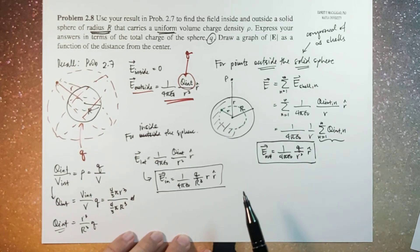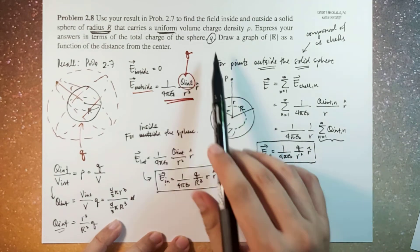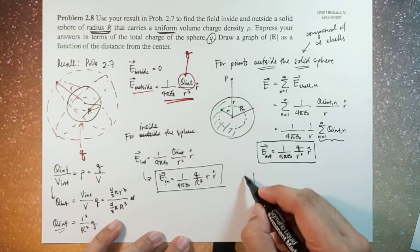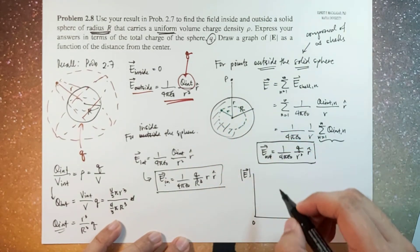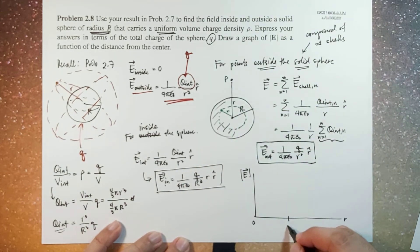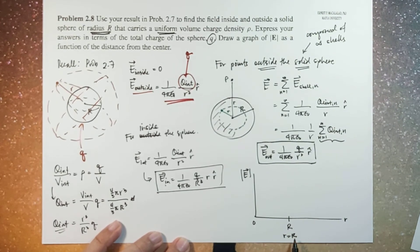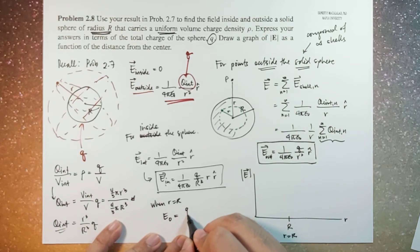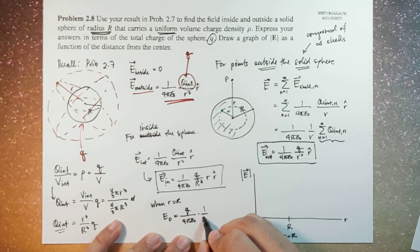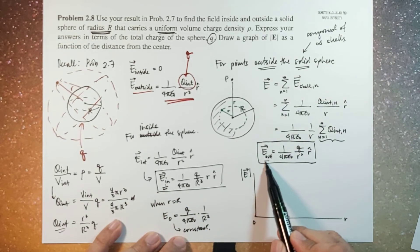You will notice that both electric fields are functions of r, but the relationship is different. If we're going to graph the magnitude of E as a function of the distance from the center, there is a boundary at the surface of your solid sphere at r equal to R. When r equals R, even if you plug it into the inside or outside expression, you end up with the same value. So at r equals R, E naught equals Q over 4 pi epsilon naught times 1 over R squared, and this is a constant.